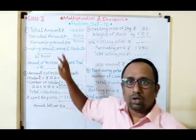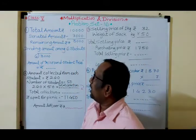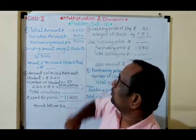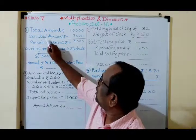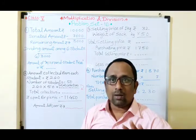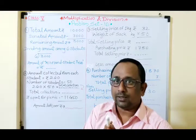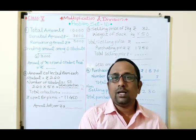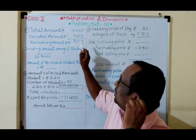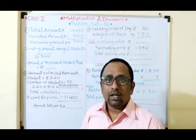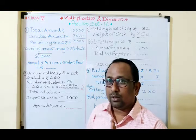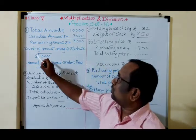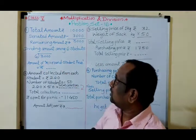You have to write and solve it this way. Total amount: ₹10,000. Anna's donated amount: ₹7,000. So 10,000 minus 7,000 equals 3,000 — this is the remaining amount, ₹3,000. Now we have to divide this amount equally among six students, so: 3,000 divided by 6. This calculation you have to do.